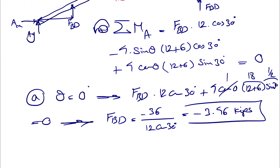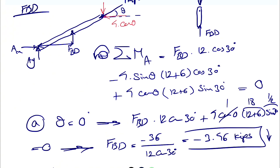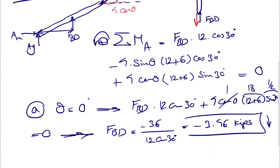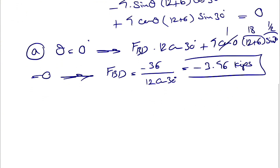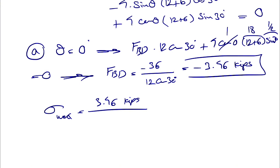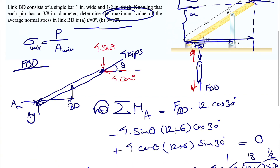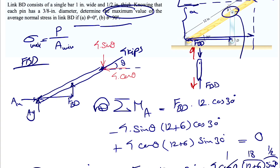The negative sign shows that F_BD is actually in the opposite direction, meaning member BD is in tension rather than compression. The force magnitude is 3.46 kips. To find the maximum average normal stress, we divide by the minimum area, which occurs at the pin intersection in member BD.